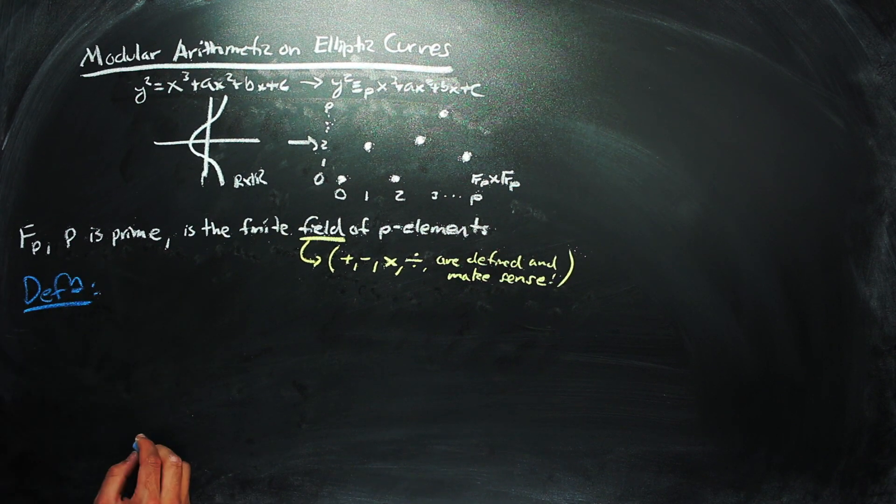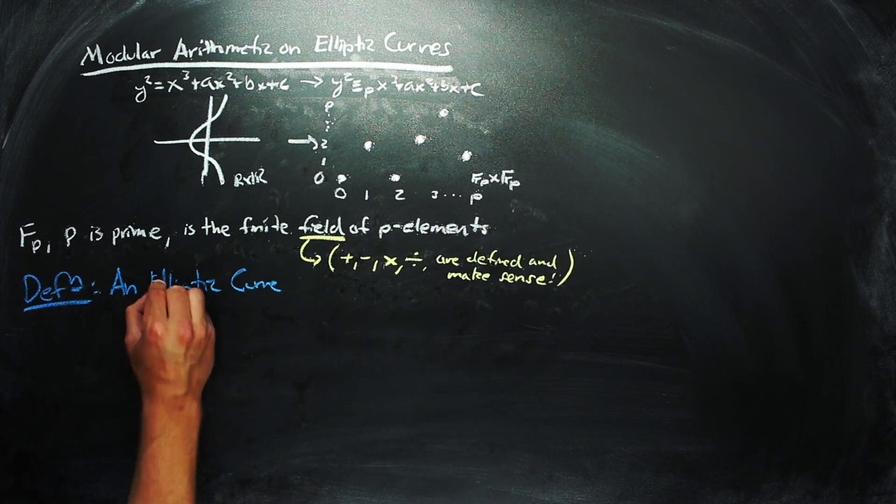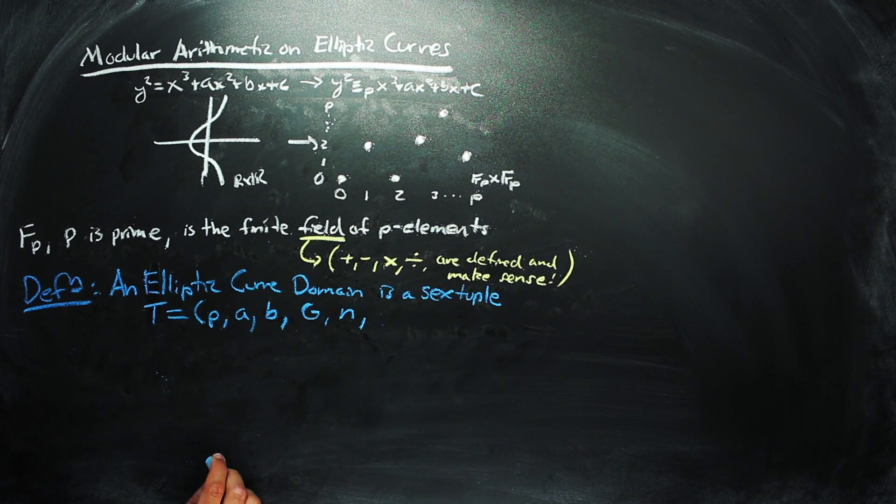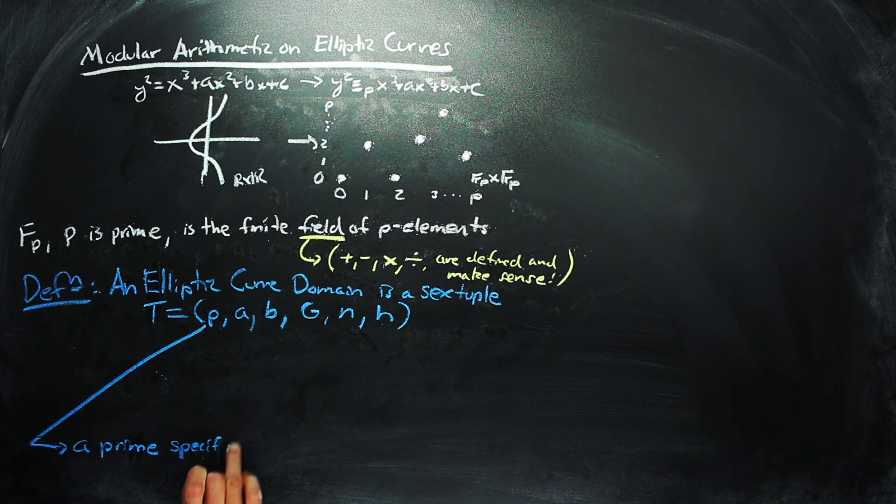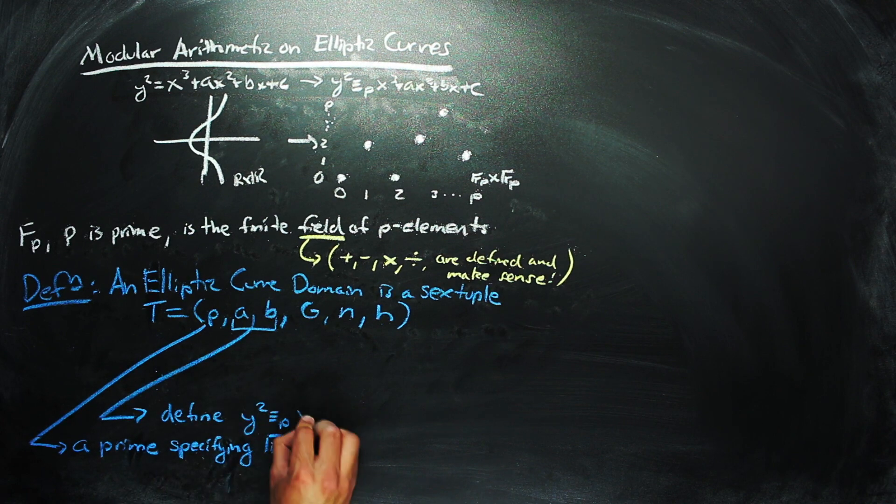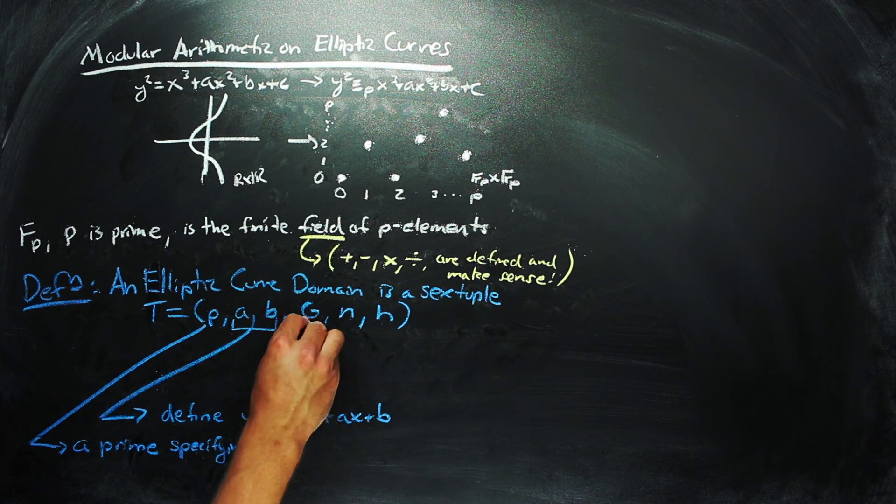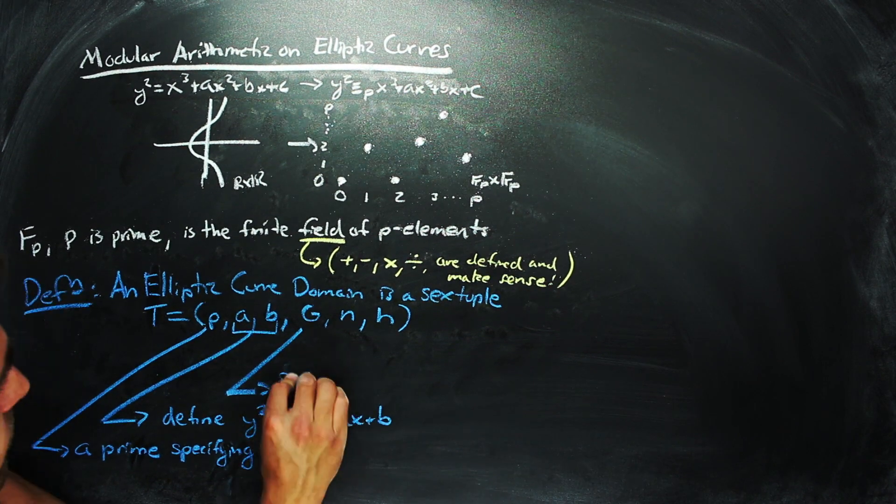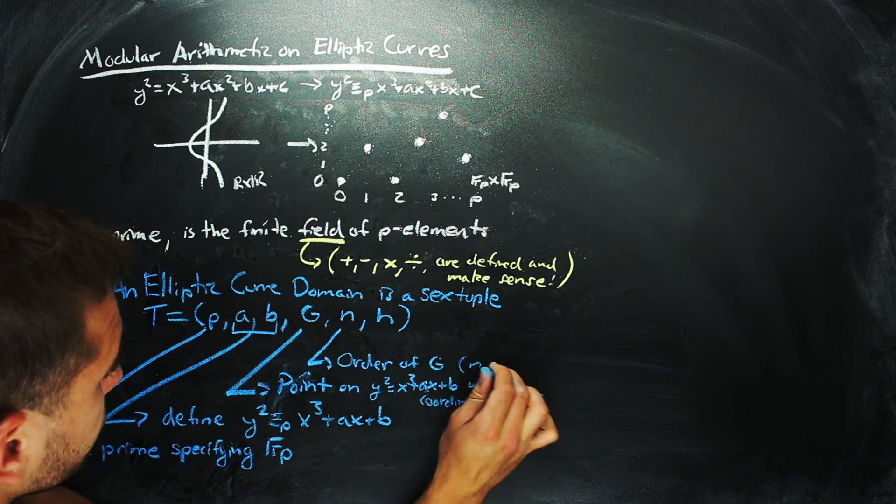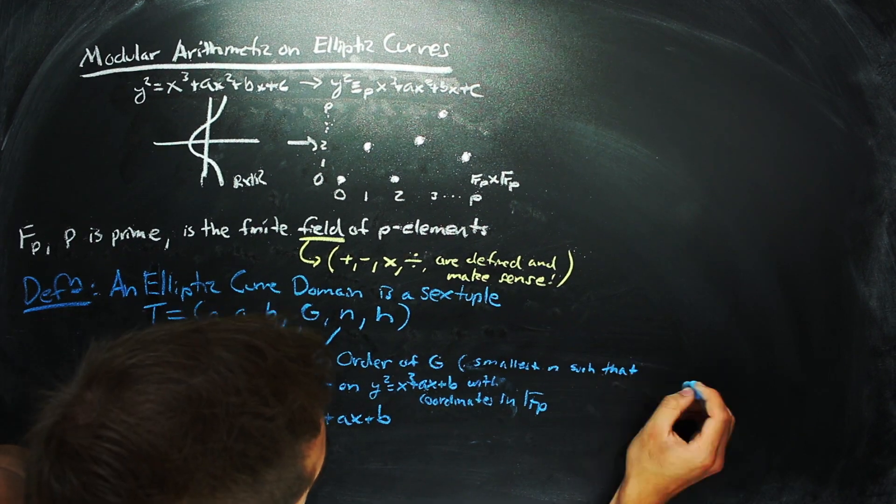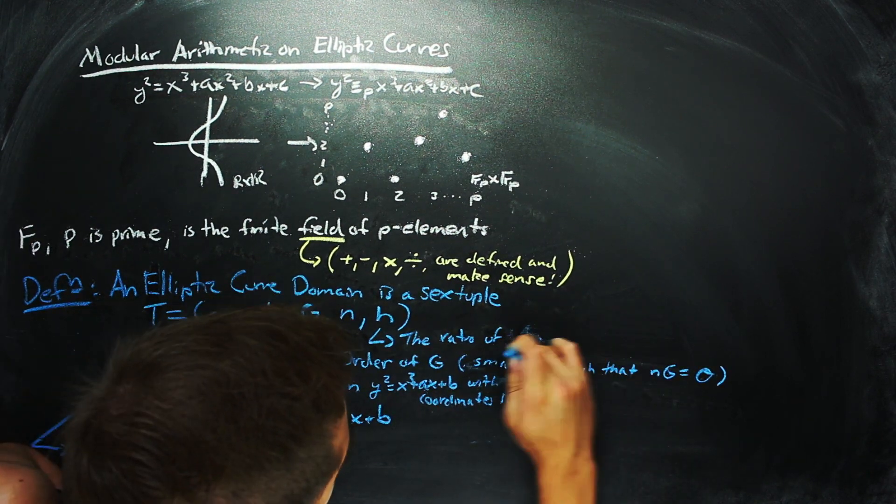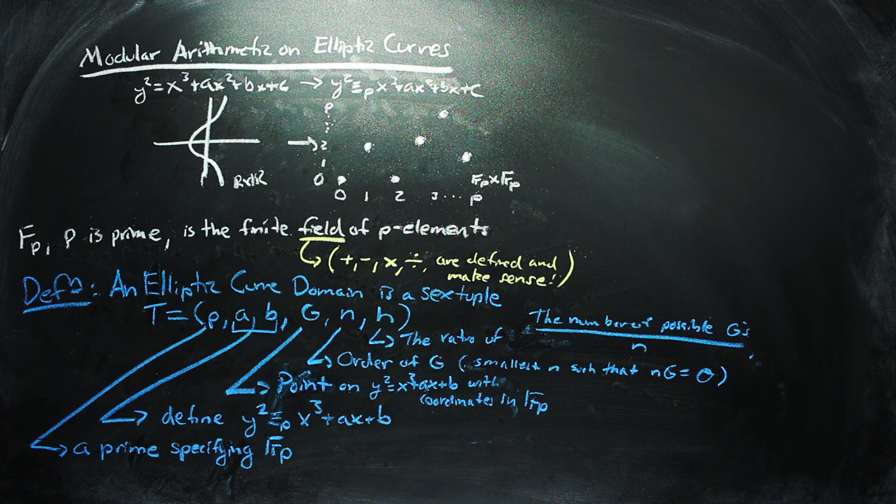The standards for efficient cryptography define an elliptic curve domain as a sextuple, t equals p, a, b, g, n, h. Where p is a prime that specifies the field, a and b specify the curve, y squared is equal modulo p to x cubed plus ax plus b. g is a point on this curve with coordinates in the finite field. n is what's called the order of g, which is the smallest multiple of g that yields the identity element. And h is the ratio of the number of possible g's one could have chosen divided by n.